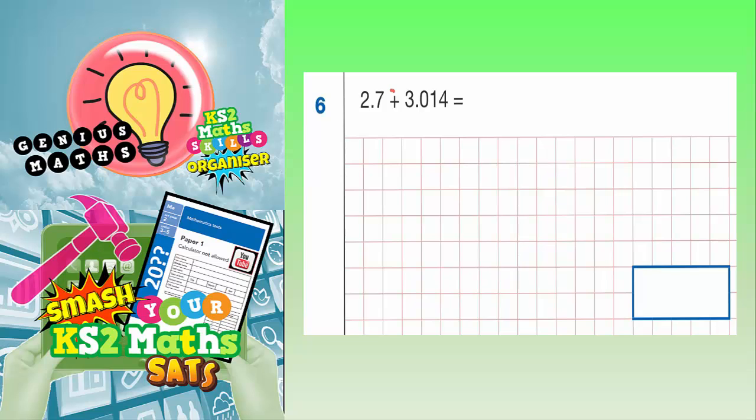Well, again, let's double check the symbol, and it's definitely an add this time. So we're adding these two numbers together. And it's quite wise just to use a column method to double check.